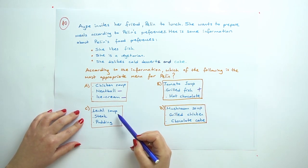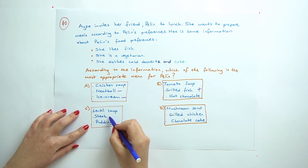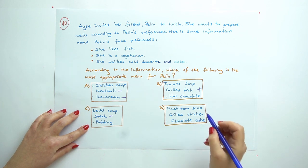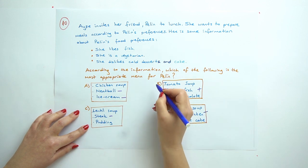And C: lentil soup, steak, and pudding. She is a vegetarian, she doesn't like steak. And D: mushroom soup, grilled chicken, and chocolate cake. So the answer is B.